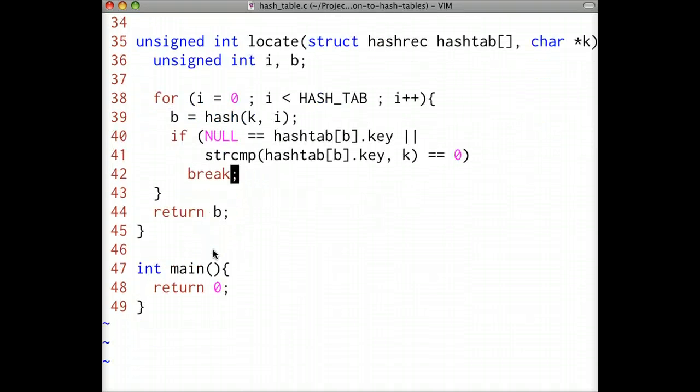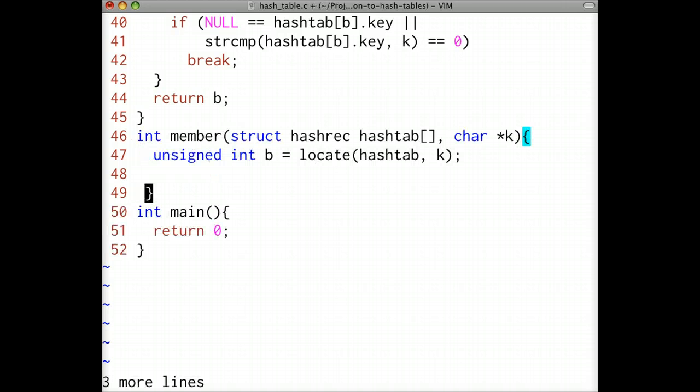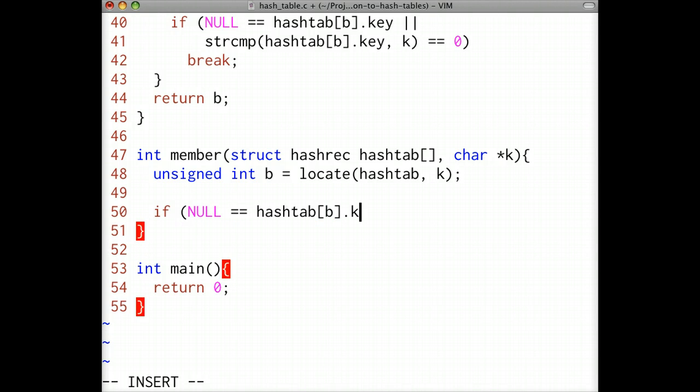Now we're ready to implement the member function using the locate helper function. If the locate function returns the bucket address of an empty bucket, then the target key isn't in the hash table and we return zero. Otherwise, if the locate function returns the address of a non-empty bucket, then we check if the bucket key and our target key match. If they do, we return one. Otherwise, we return zero.